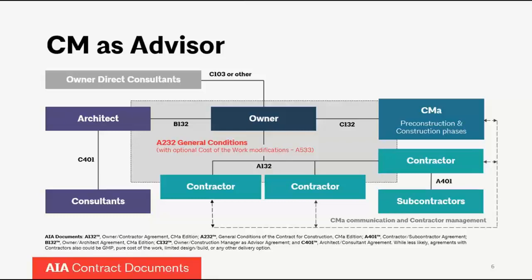The CMA is going to have responsibilities in both the pre-construction phase — the run-up to bidding when the design is being developed — as well as the construction phase. The owner has a solid or direct line of contractual privity with either a general contractor or with multiple prime contractors, and the CM has a dotted line. The CMA does not engage directly any of the contractors; the owner holds the contracts with those parties.